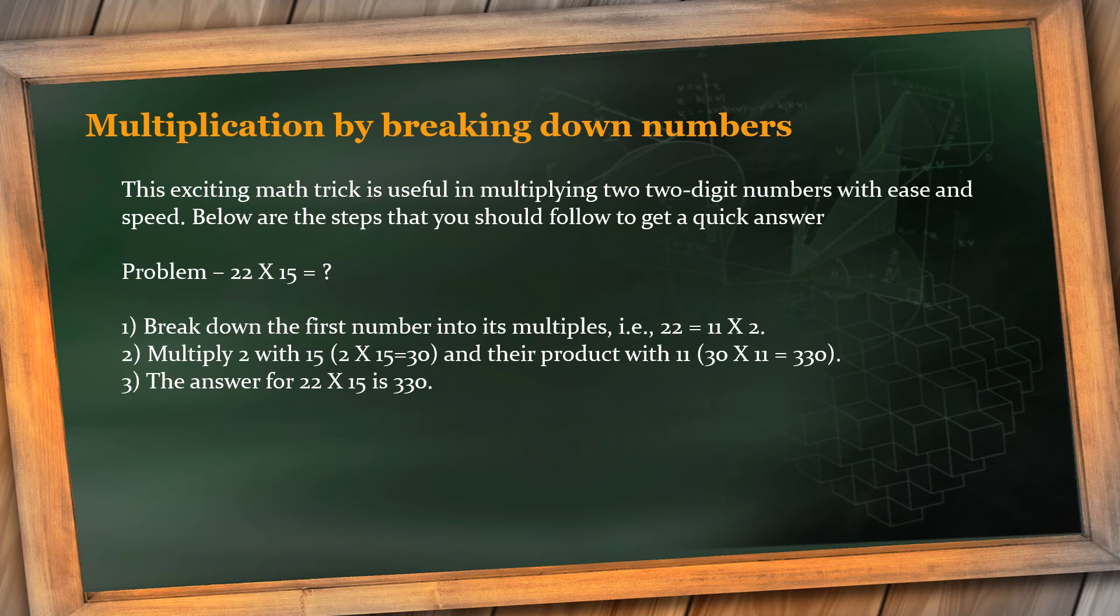But please remember, this rule won't work with prime numbers. If you have any one digit in the question as a prime number, use the second number and break down those. Or else, if you have both numbers that are prime, sorry, we cannot break down the numbers and multiply. There you have to go with multiplication of the numbers properly.